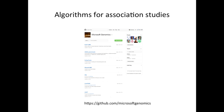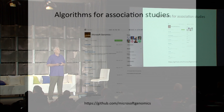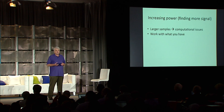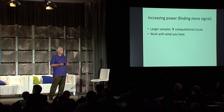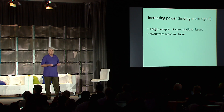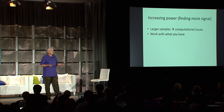For the last six years or so, several of us at Microsoft Research have been working on algorithms for association studies. There are a lot of them that we've put together — they're available open source at GitHub. And today I have time to tell you just about two of them. Both of them have to do with increasing power, that is, finding more signal from your data.